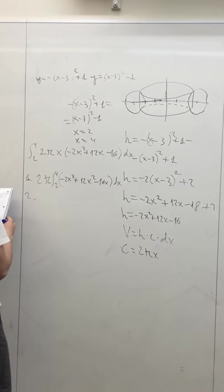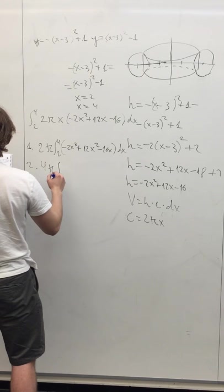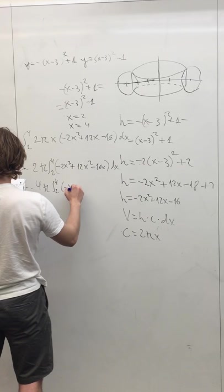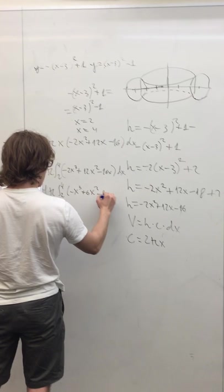Multiplying through, we can simplify the integral to the form negative 2x cubed plus 12x squared minus 16x dx.